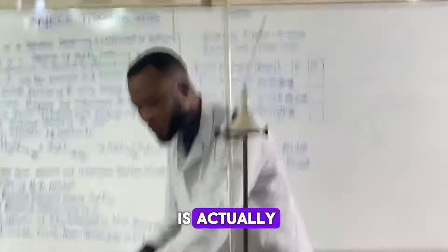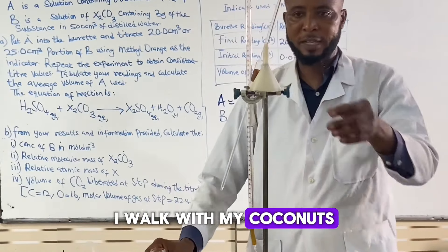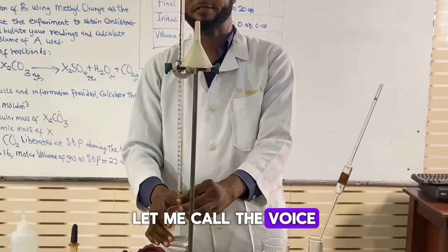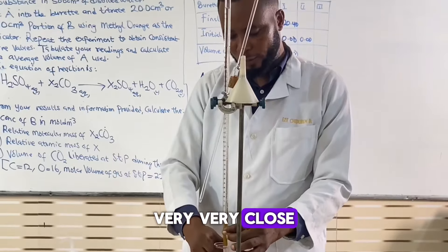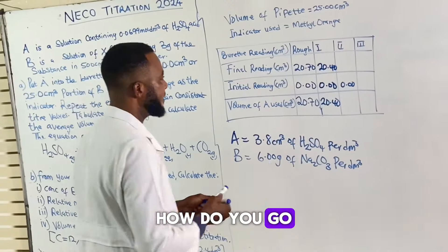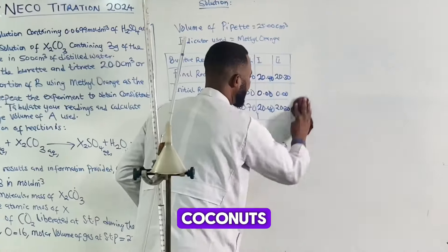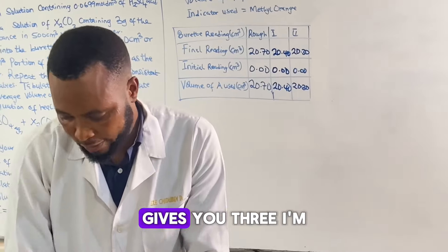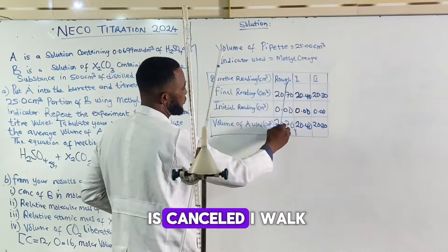If I actually get a concordant reading, I can do away with the rough and work with my concordant values. There's a macro calibration then. Let me calibrate. I will try as much as possible to get either this or very close. The reading is 20.3. I think there's no need for another run. I'm noting my concordant readings: 20.40 and 20.30. I will decide to do it when we talk about concordant values. I'm not going to penalize you if you do it up to 3 titrations. Except if the table gives you 3.